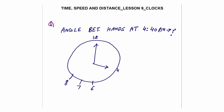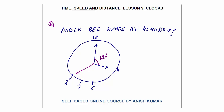Question 1: What is the angle between the hands of the clock at 4:40 p.m.? First, take the standard time — at 4 o'clock the gap between the hands is 20 minutes, which is 20 × 6 = 120 degrees. Now at 4:40 p.m., both hands will have moved for 40 minutes. The minute hand covers 6 degrees per minute, so in 40 minutes it moves 40 × 6 = 240 degrees.